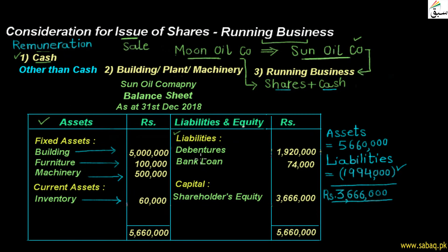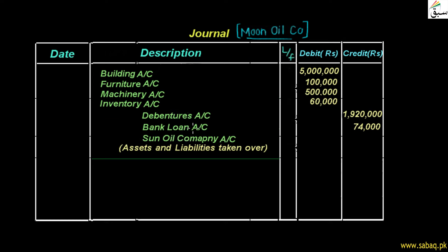Moon Oil Company is also acquiring the liabilities of Sun Oil Company. Debentures are a form of loan instrument — a fixed-interest debt on which the company pays interest regularly, and repays the principal at the end. The debenture liability is 19,20,000 and the bank loan is 74,000. These liabilities — 19,20,000 debentures and 74,000 bank loan — will be credited in the journal of Moon Oil Company.